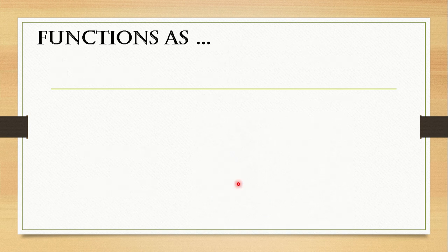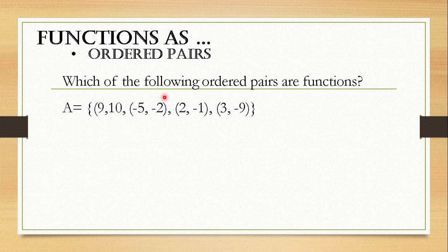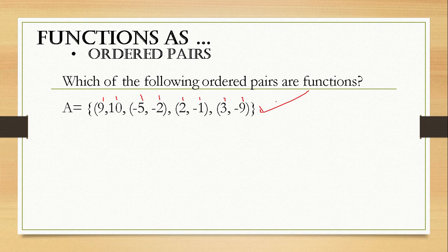Now let us determine function as ordered pairs. Which of the following ordered pairs are functions? Let's start with set A. Here we have the ordered pairs: (9, 10), (−5, −2), (2, −1), (3, −9). The answer is yes, it is a function. Looking at your domains — 9, −5, 2, 3 — together with your range — 10, −2, −1, −9 — the relation here is a 1-to-1 function, which means each domain has exactly one range. Therefore, this is a function.